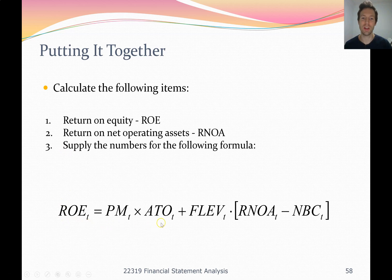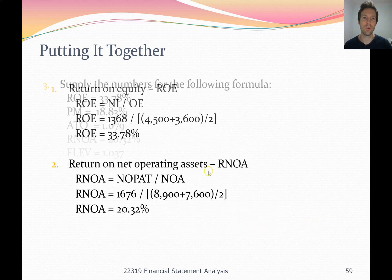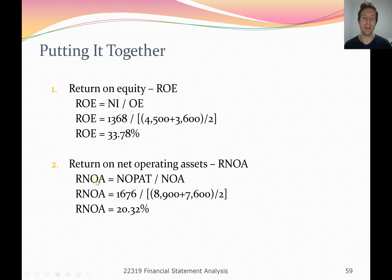The DuPont formula is: profit margin times asset turnover, plus financial leverage times spread, which is RNOA minus NBC net borrowing cost. For our second question, RNOA, we can calculate NOPAT — net operating profit after tax — divided by average net operating assets. RNOA stands for return on net operating assets.